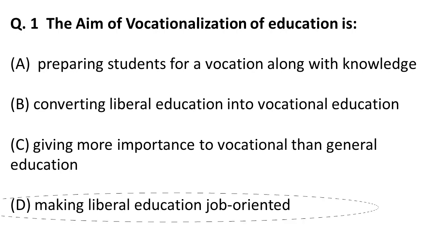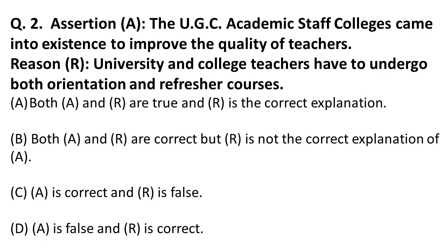The next question has an assertion: the UGC Academic Staff College came into existence to improve the quality of teachers — this is correct. The reason is: university and college teachers have to undergo both orientation and refresher courses — this is also correct. So the correct answer is A, where both A and R are true and R is the correct explanation of A.